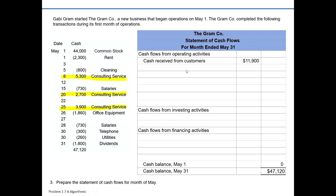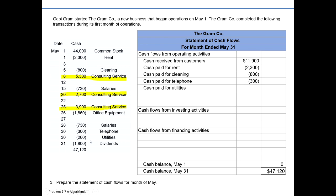We also have several outflows related to our normal day-to-day activities. Cash paid for rent is shown as a negative $2,300 in brackets because Graham Company is paying out cash — it's an outflow. Cash paid for cleaning is negative $800. Cash paid for telephone is negative $300. And cash paid for utilities is an outflow of $260.